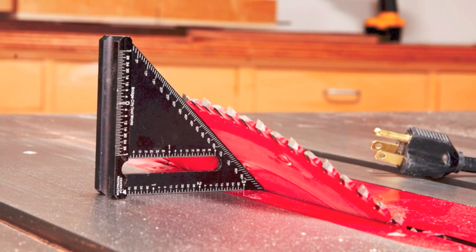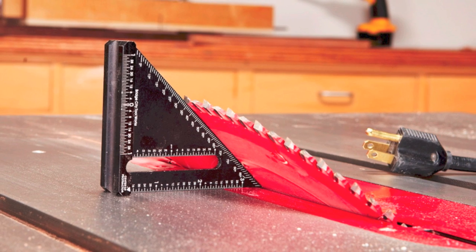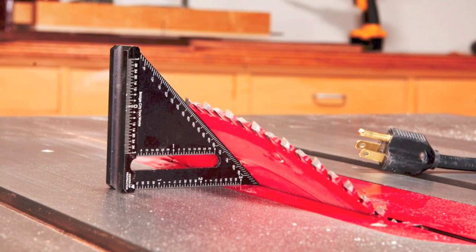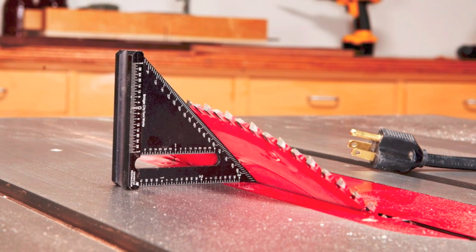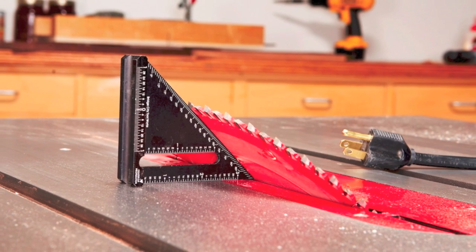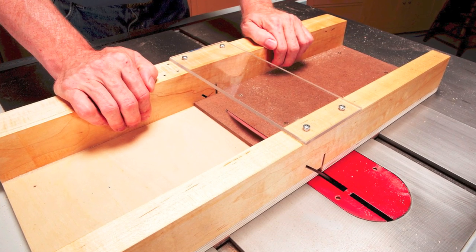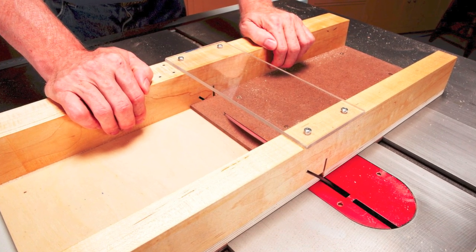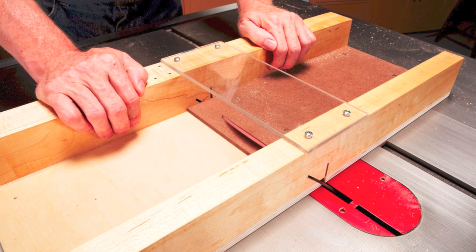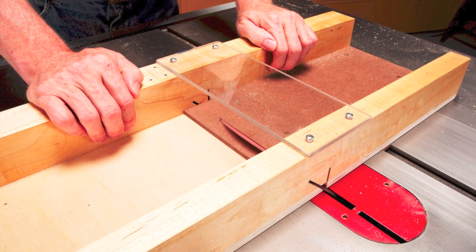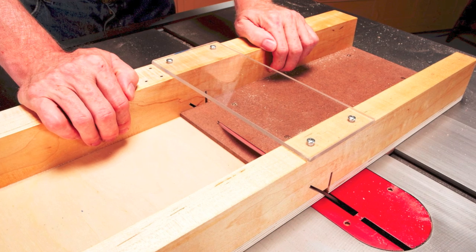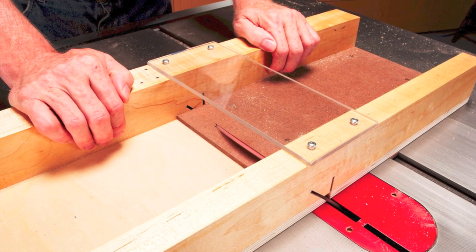Remove the sled and tilt the blade to 45 degrees. For best results, use a 60-tooth cross-cut blade for every cut on this project. Remove both pieces of hardboard from the sled. Turn around the left piece and refasten it to the sled. Cut an angled slot all the way across it. Toss the waste piece.